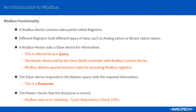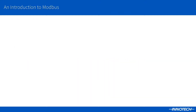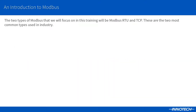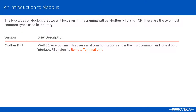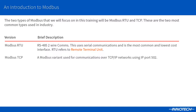This will all work fine if the master has queried the slave in the correct manner with the correct parameters. If not, Modbus has built-in error checking that can provide some feedback. There are two main types of transports that are used with Modbus. Remote Terminal Unit or RTU is the most common method to connect devices due to its lower cost RS-485 connection topology. Modbus TCP is also used in the industry and allows the Modbus protocol to utilize the Ethernet network as a transport. Note that this uses IP port 502 to guide the Modbus traffic around the local area network.